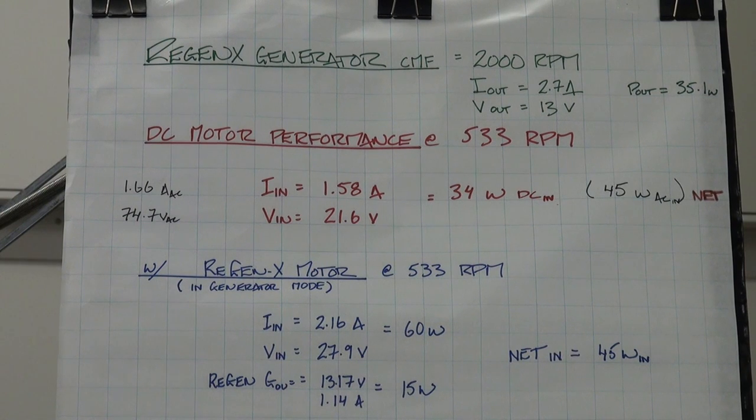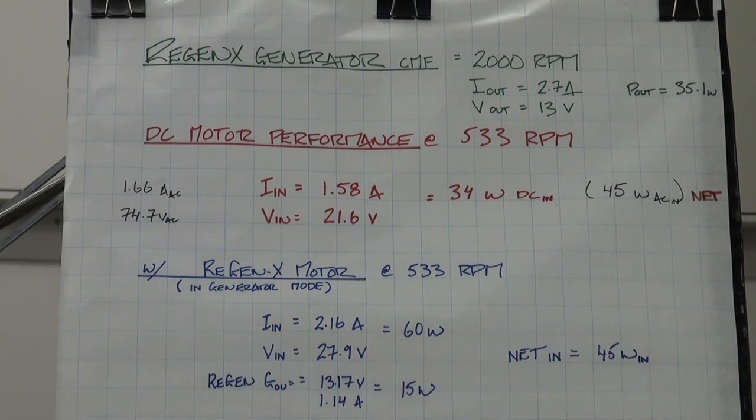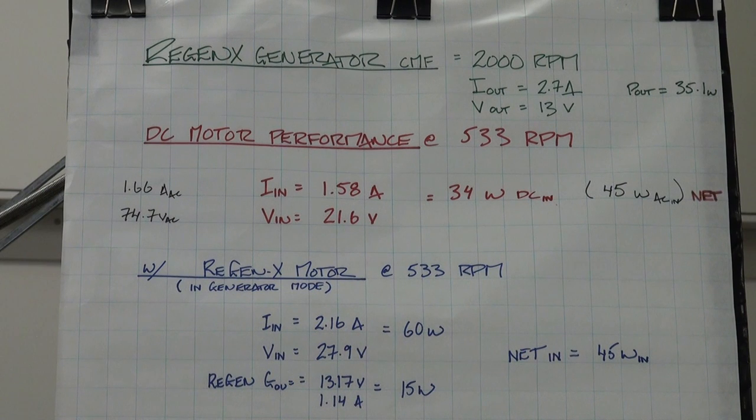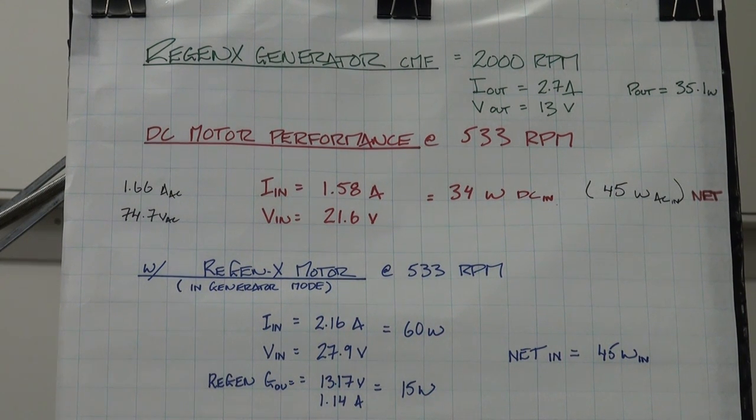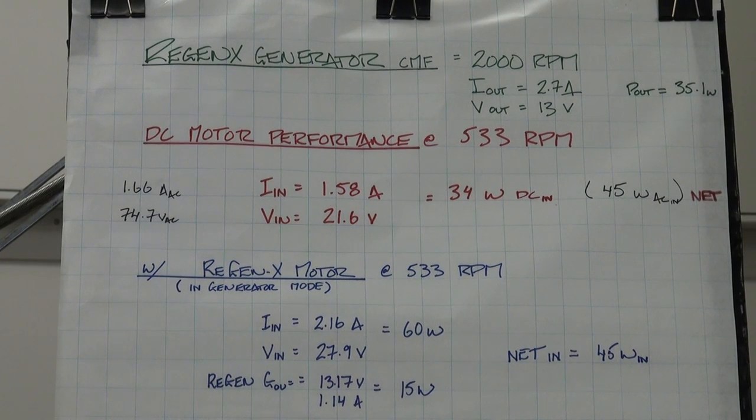At that speed, the output of the RegenX coil is roughly 2.7 amps at 13 volts or 35 watts per coil.